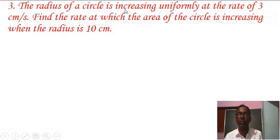The radius of a circle is increasing uniformly at the rate of 3 cm per second. Find the rate at which the area of the circle is increasing when the radius is 10 cm.